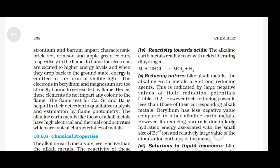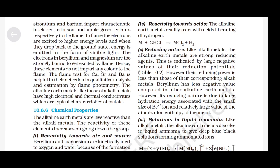Reactivity towards acids: the alkaline earth metals readily react with acids liberating dihydrogen: M + 2HCl → MCl₂ + H₂. Reducing nature: like alkali metals, the alkaline earth metals are strong reducing agents, indicated by large negative reduction potential values. However, their reducing power is less than those of corresponding alkali metals. Beryllium has a less negative value compared to other alkaline earth metals; its reducing nature is due to large hydration energy associated with the small size of Be²⁺ ion and a relatively large atomization enthalpy.